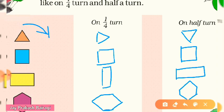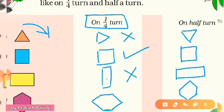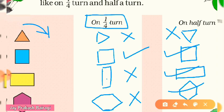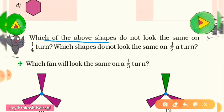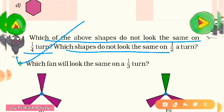In one fourth turn, which pictures look the same? Triangle is not looking the same, square is looking the same, rectangle is not looking the same, and hexagon is also not looking the same. In half turn: triangle is not the same, square, rectangle, and hexagon are all looking the same. Only the triangle does not look the same in half turn.